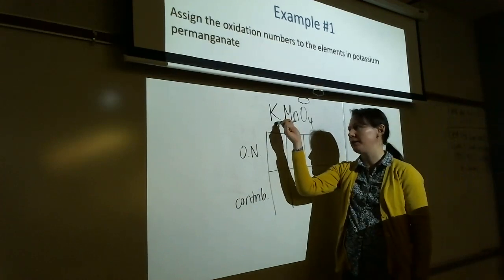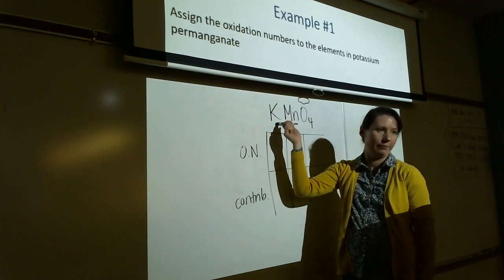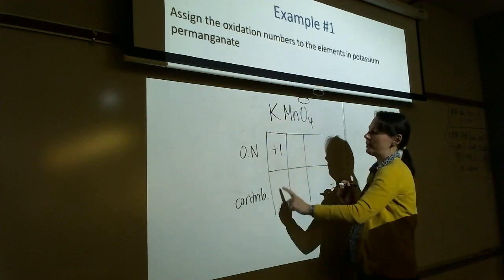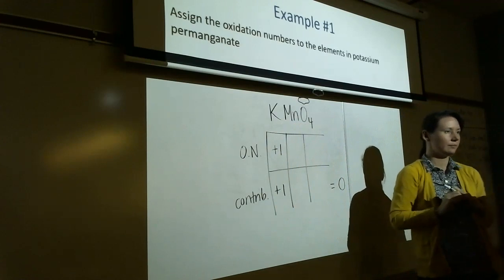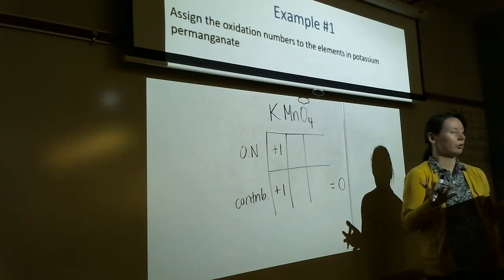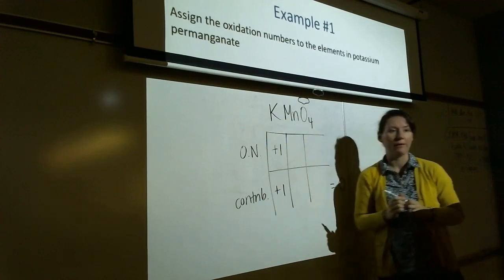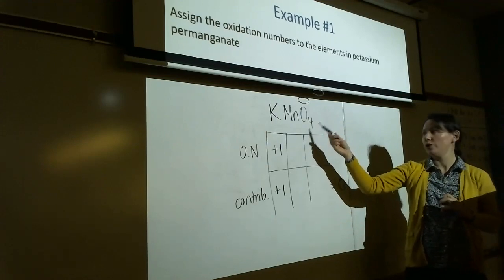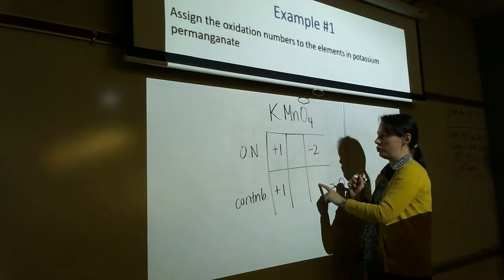Let's start with potassium — it's in group one, so we have an always rule: it's always plus one. There's one potassium, so its contribution is plus one. Manganese is a transition metal — we have no rules for transition metals, so we'll come back to it. Oxygen in a compound — this is not a peroxide, so oxygen is minus two. There are four of them, so the contribution is minus eight.